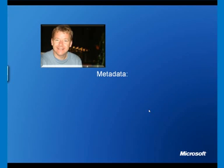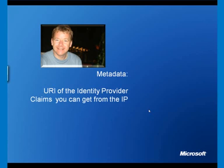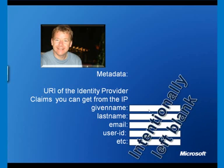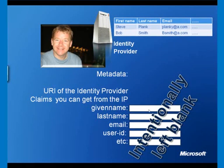The cards themselves don't contain any data — they only contain metadata. In the same way that my credit card doesn't contain details of my last purchase, my current balance, or payment history, these cards don't contain that kind of detail either. The metadata contained in one of these cards is the URI of the identity provider and the claims you can get from the identity provider — given name, last name, email, user ID, etc. — but not the data itself. The data is intentionally left blank. The card is really the key that can be used to unlock that database, which is a service running on the internet or on your enterprise network.